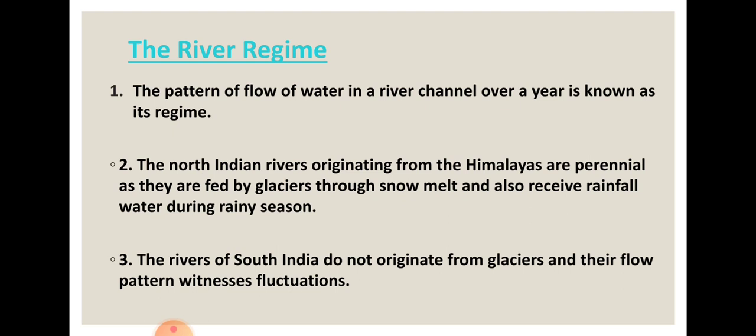The amount varies from season to season. In the Mahananda river in Siliguri, the maximum amount of water is seen during monsoon days, because during monsoon the river receives water from both glaciers and rainfall. The pattern of the flow of water in a river channel over a year is known as the river regime.